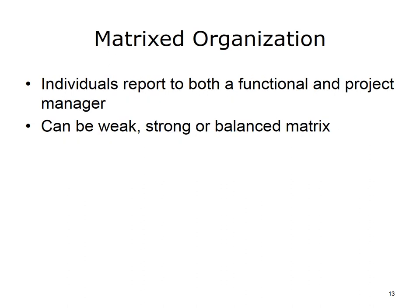In a matrixed organizational structure, the project resources — that is, the people working on the project — have a departmental or functional manager and also report to a project manager. The leadership or authority in the matrixed organization is shared between the project manager and the functional manager. There are three sorts of matrix structures: weak, strong, and balanced.